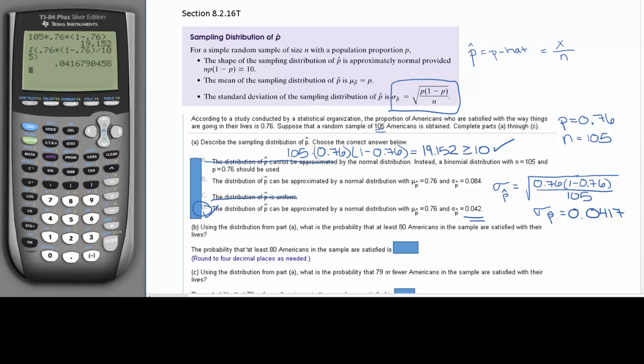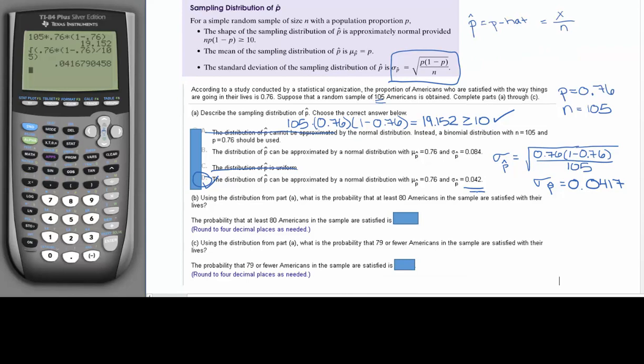For part B, it says, using the distribution from part A, what is the probability that at least 80 Americans in the sample are satisfied with their lives? So we're going to start off by drawing a standard normal curve, or a bell curve. We know in the middle is going to be our mean, and our mean is going to be 0.76. And it's wanting us to find the probability of at least 80 Americans. Hopefully, you're looking here and notice that 0.76 and 80 are very, very different numbers.